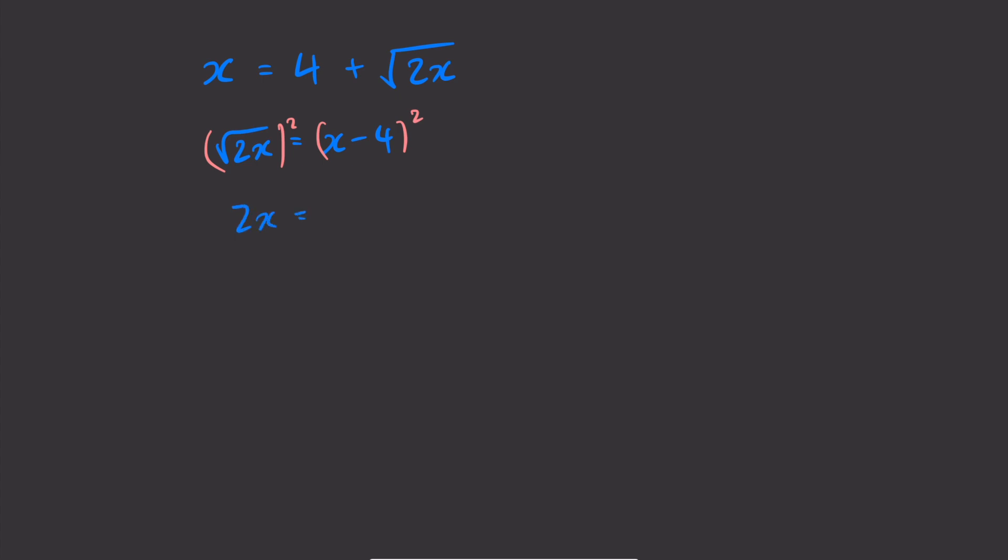So we've got 2x equal to x take 4 squared. Then we want to expand those brackets, so we're going to have 2x equal to x squared take 8x plus 16. Then subtract that 2x from the right hand side and we're going to end up with x squared take 10x plus 16 equals 0. We can factorize this. Factors of 16 that sum to negative 10 are negative 8 and negative 2. So we get x take 8 multiplied by x take 2 equal to 0. This process has given us solutions for x of x equal to 8 or x equal to 2.